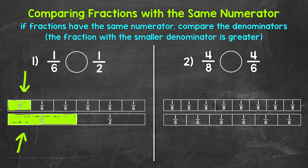It's because of the denominators. The fraction strip showing sixths is divided into six equal parts, and the fraction strip showing halves is only split into two equal parts. When we have the same numerator, we compare the fractions by looking at the denominators. The fraction with the smaller denominator is greater, because the larger a denominator is, the more parts a whole is divided into — therefore the parts are smaller. The smaller a denominator is, the fewer parts a whole is divided into — therefore the parts are bigger.